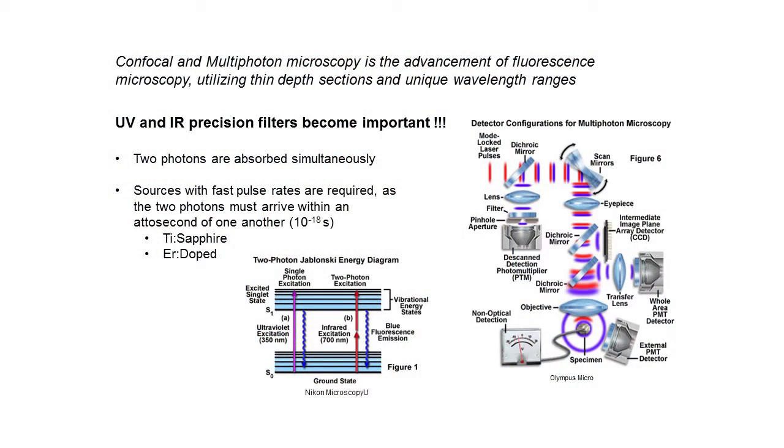Moving forward in the microscopy, we have confocal and multi-photon, which are advanced fluorescence microscopy techniques that utilize specific UV or IR filters. UV filters are important because you breach that diffraction limitation. If you're able to tag or use an antigen that is adept or not really harmed or photobleached by UV light, by all means please do. You're going to get better resolution in your system and ultimately better performance or contrast.